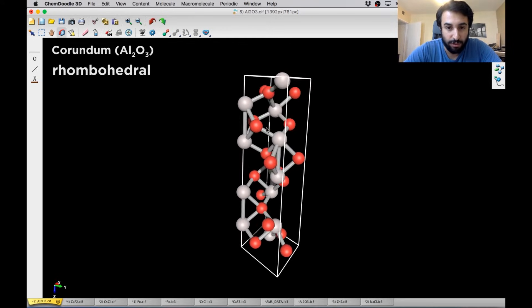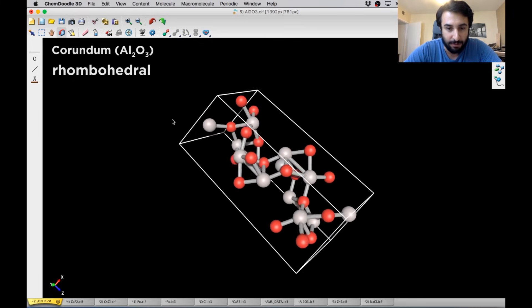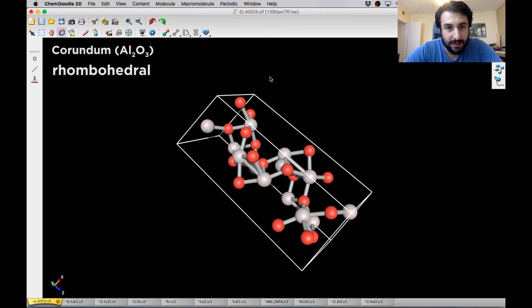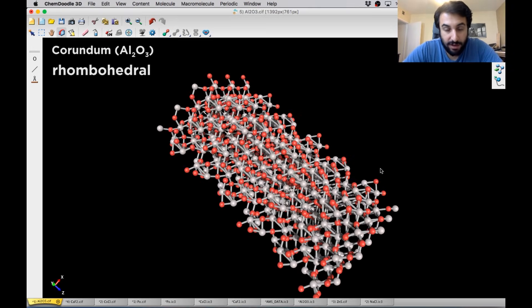And so this is called rhombohedral. We can see that it's not at all like the cubic structure that we looked at. And so let's build this out once again just a little bit. Let's just do three of these since it's rather complex. So here's that.